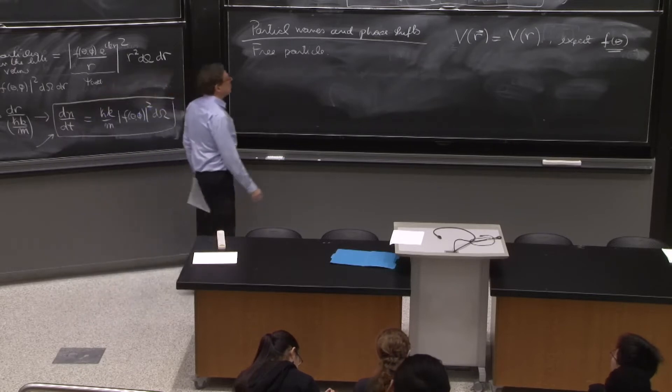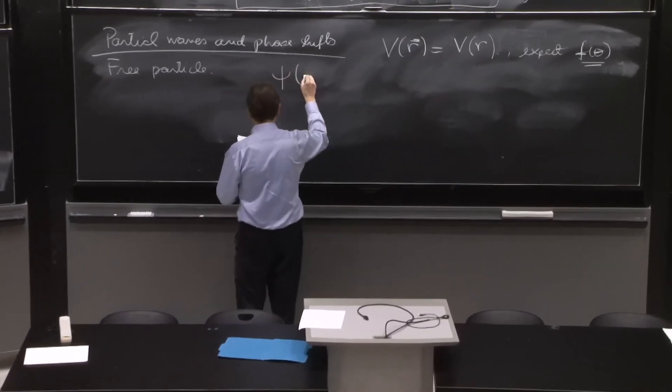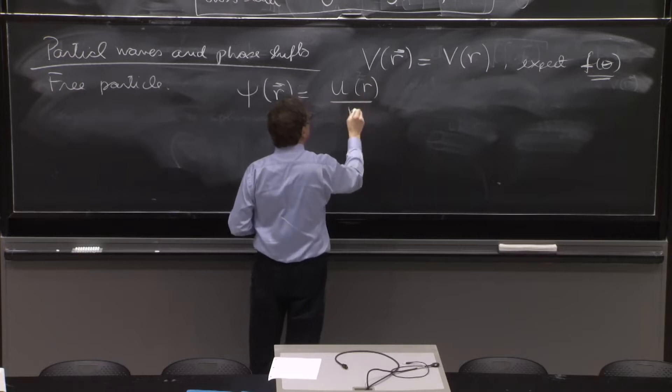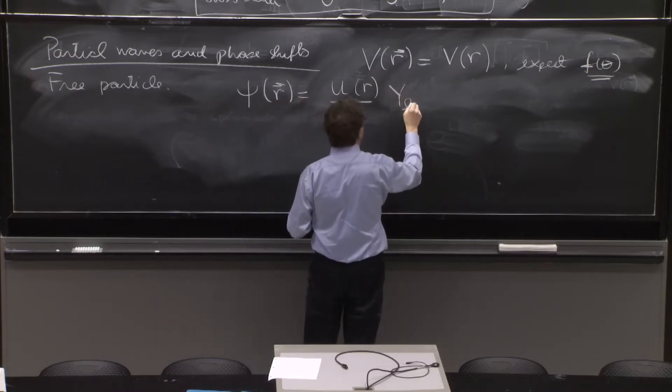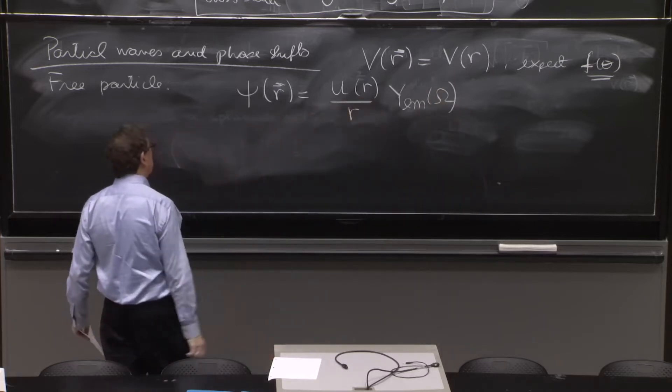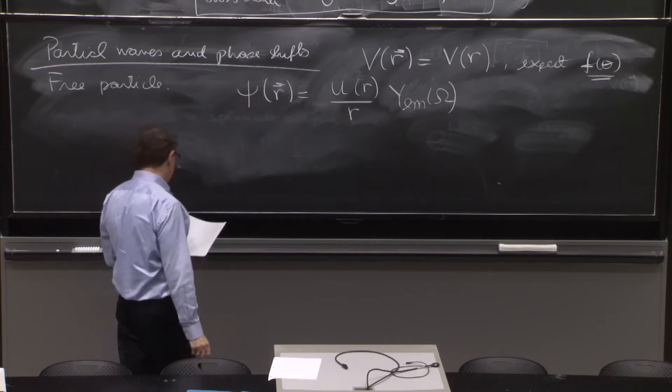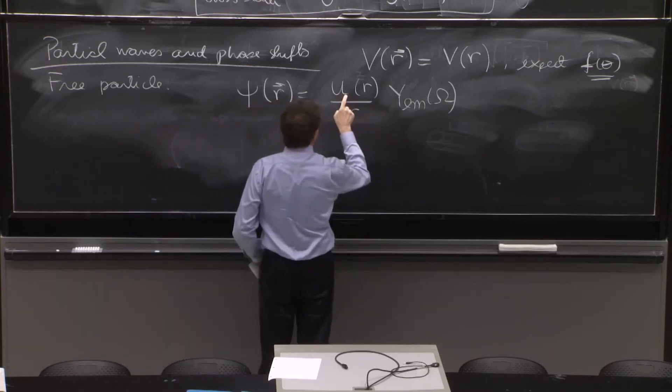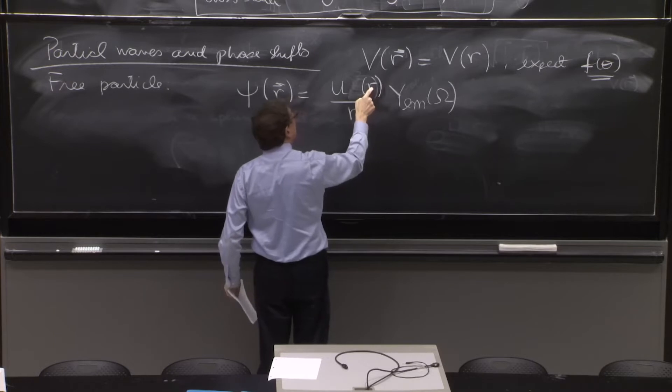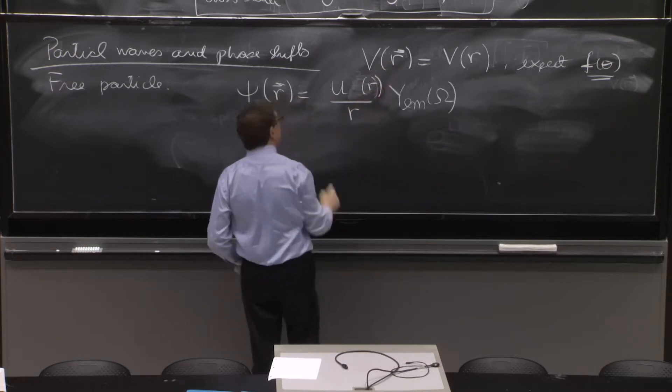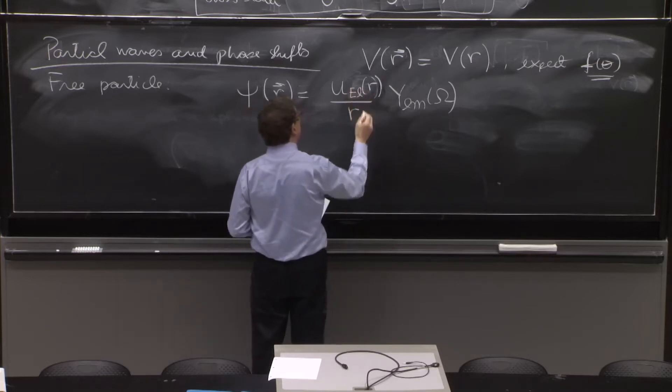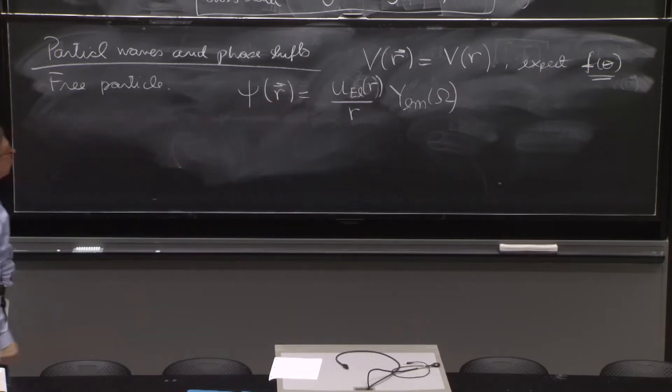So we can't escape having to do the free particle in spherical coordinates. It's something you have to do. So what are solutions in spherical coordinates? We have solution psi of r. Remember, the language of spherical coordinates was u of r divided by r and a Y_lm of omega. That was a typical solution, a single solution of the Schrodinger equation. Well, the u only depends on l. The m disappears.